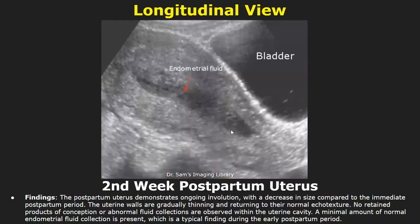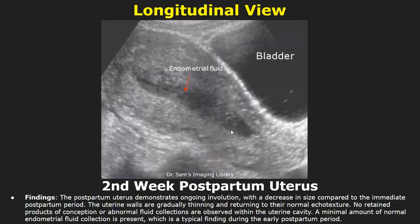Here is a second week postpartum uterus. In the findings, the uterus demonstrates ongoing involution with a decrease in size compared to the immediate postpartum period. The uterine walls are gradually thinning and returning to their normal echo texture and there were no retained products of conception or abnormal fluid collections. A minimal amount of normal endometrial fluid collection is present, which is a typical finding during the early postpartum period.